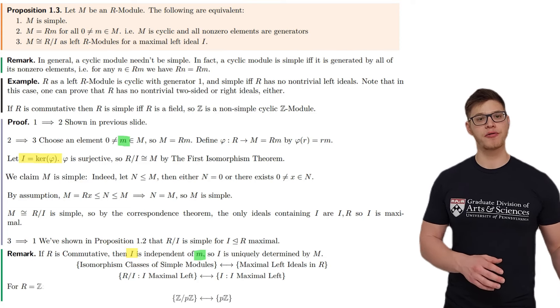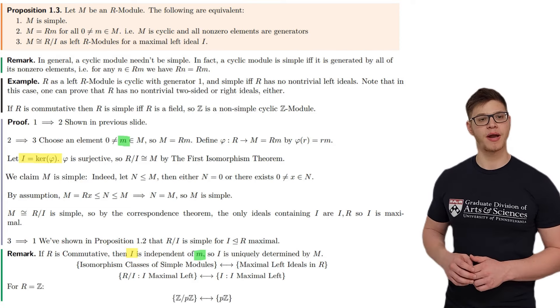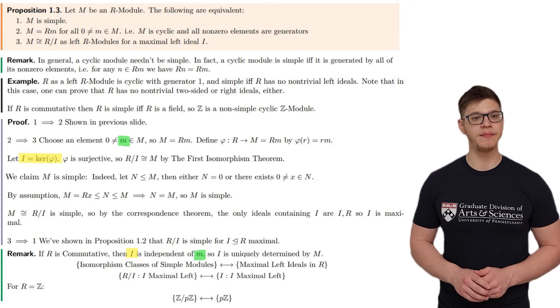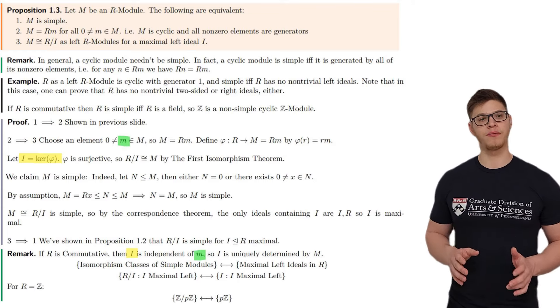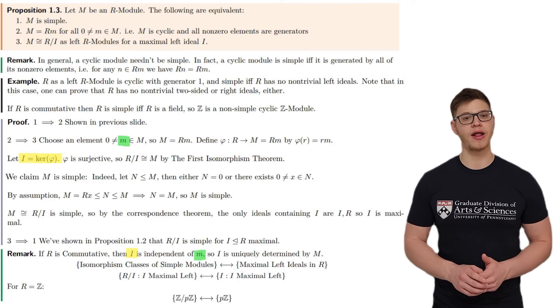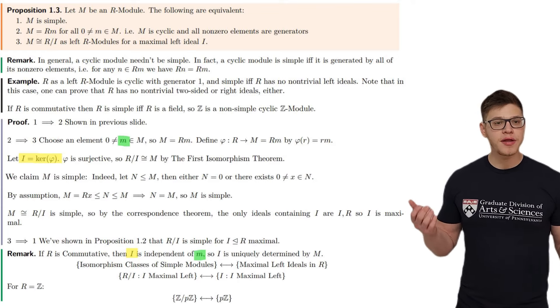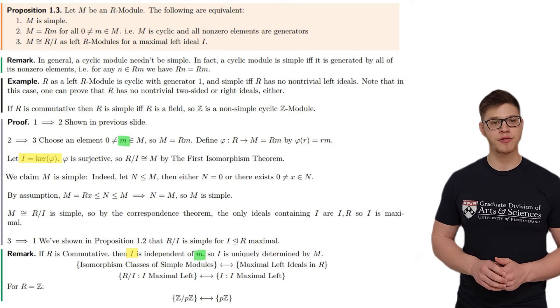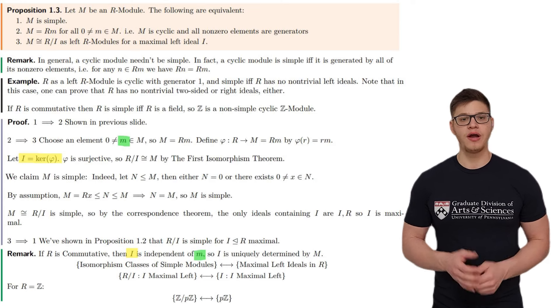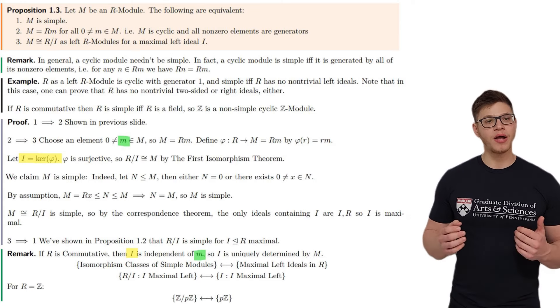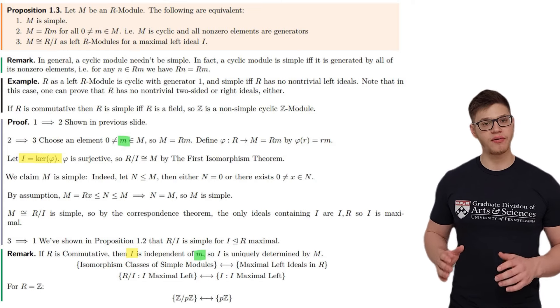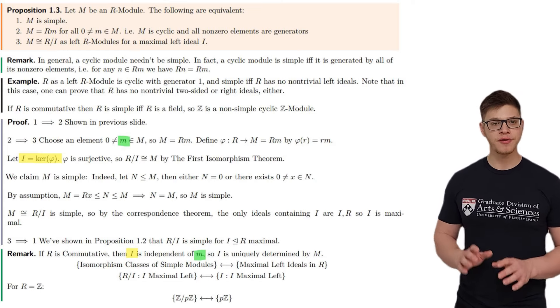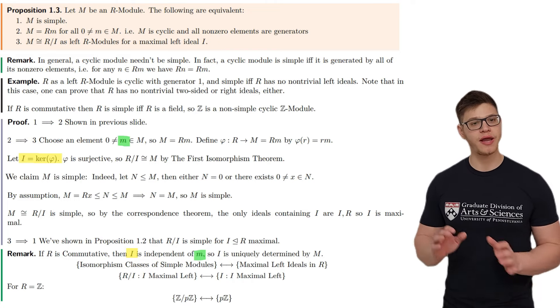For example, for the integers, the maximal ideals are those generated by primes, and the simple modules are those of the form Z mod pZ for a prime p. We see that all simple modules are cyclic and every non-zero element is a generator. This is again very similar to the behavior of a one-dimensional vector space, where every non-zero element generates it, with the marked difference that simple modules are generally not going to be free, unlike vector spaces. So try and think of when exactly a simple module is free.